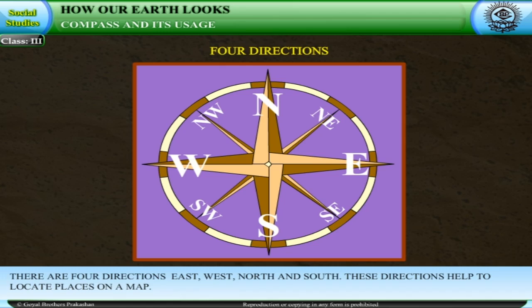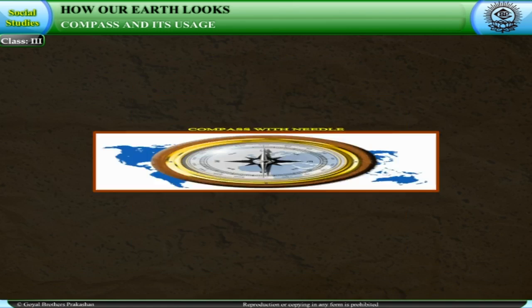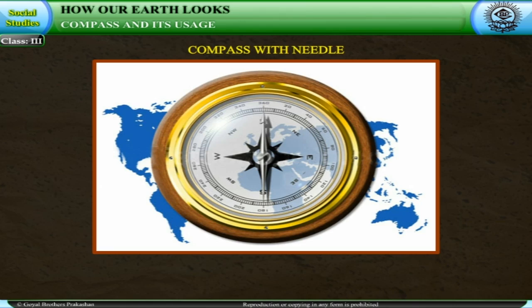These directions help to locate places on a map. The compass is like a watch and has a needle which always points in the north direction.